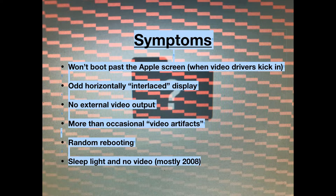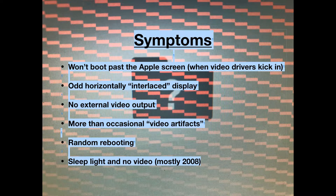Sleep light with no video — a black screen with the sleep light going in and out — is another symptom. 2008 was also a really bad year for Apple, and that was the most common symptom for a bad GPU on those machines. It's less common with 2011. If you think that's what your machine is doing, make sure it's not a RAM issue, because the wrong RAM in a 2011 will also cause that symptom. 2011s take 1333 MHz DDR3 SODIMMs, so make sure you're not using 1066 or 1600 MHz RAM, or you could misdiagnose your machine.